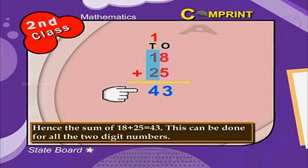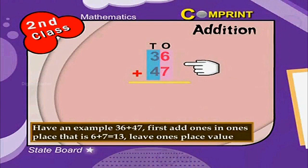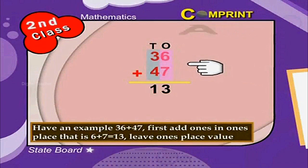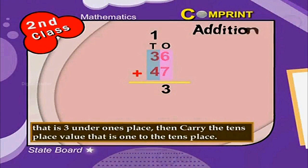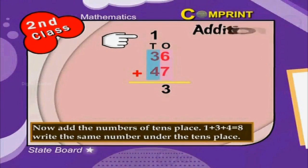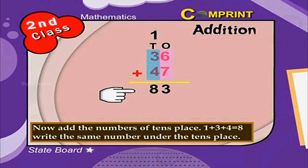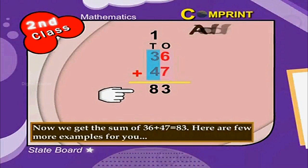This can be done for all two digit numbers. Now let us learn addition in short form. We can do additions in a shortcut method. Have an example: 36 plus 47. First, add ones in ones place — that is 6 plus 7 is equal to 13. Leave 3 under ones place, then carry the tens place value, that is 1, to the tens place. Now add the numbers of tens place: 1 plus 3 plus 4 is equal to 8. Write 8 under tens place. We get the sum of 36 plus 47 is equal to 83.